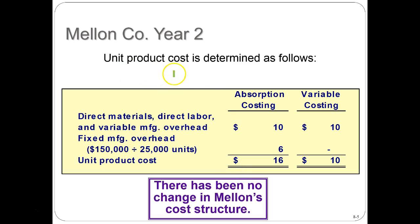The unit product cost is determined as follows — absorption versus variable. Remember that absorption includes the fixed manufacturing overhead as the key difference. Under absorption, we take the $150,000 fixed manufacturing overhead, divide by 25,000 units, giving us $6 per unit, bringing the unit product cost to $16. Under the variable cost method, we include only the variable manufacturing cost, which is $10.